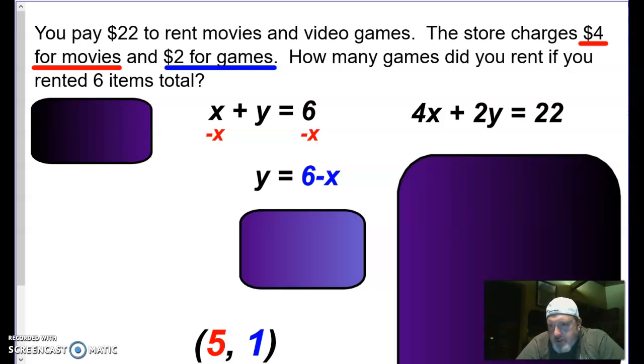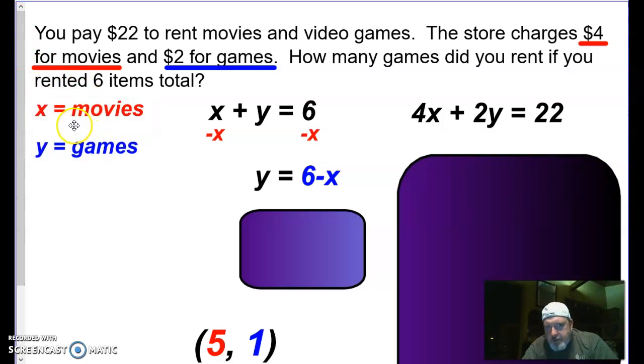All right. You paid $22 to rent some movies and video games. And the store charges $4 per movie and $2 per game. And then it says, how many games did you rent if you rented six items total? So we know, first thing we can do, define our variables. We'll let X be movies, Y be games. We rented a total of six items. So the sum of our movies and games was six. I subtracted X from that right away to solve for Y. So I know Y is six minus X.